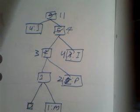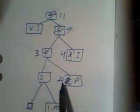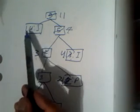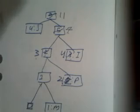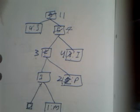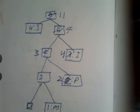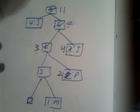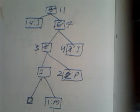Let's check the integrity of the tree: 0, 1, 1, 2, 3, 4, 4, 7, 11 — it's in increasing order. And in all the nodes, the parent tree has greater frequency than the child node. So we finish with the Adaptive Huffman Encoding.